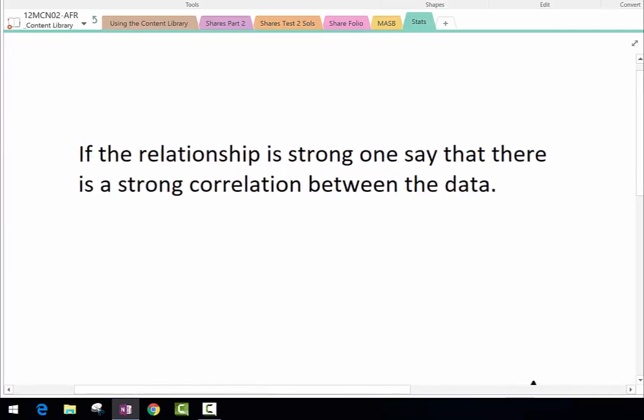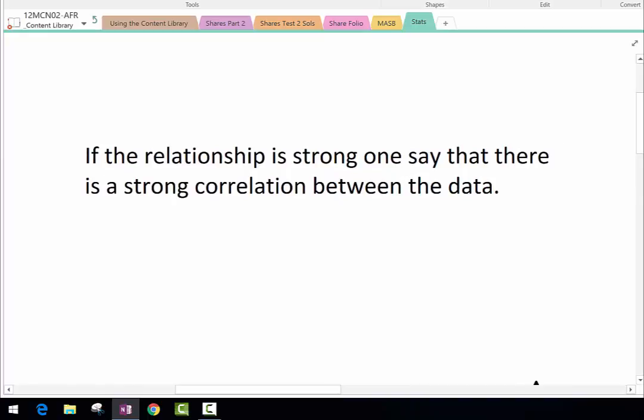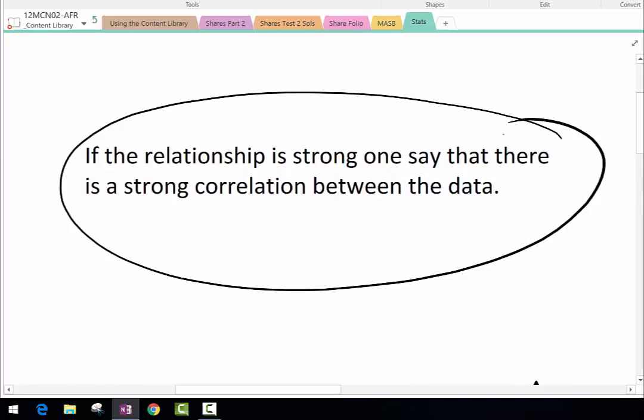If the relationship is strong, we say that there's a strong correlation between the data. In stats, to be able to make predictions and understand what's going to happen in the future, we want a strong correlation. So one's definitely relating to the other one. With the ice one, the longer it's out of the fridge, the quicker it's going to melt.